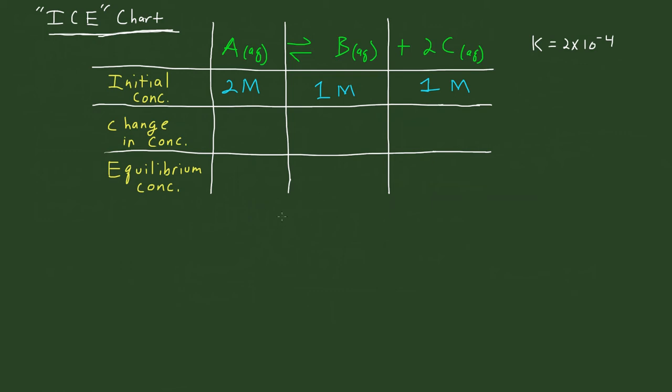Now for the changing concentration row, this is going to be represented by variables, usually X. The difficult part here is trying to figure out whether the reaction is going in the forward or the reverse direction. A lot of times you can just tell using Le Chatelier's principle.